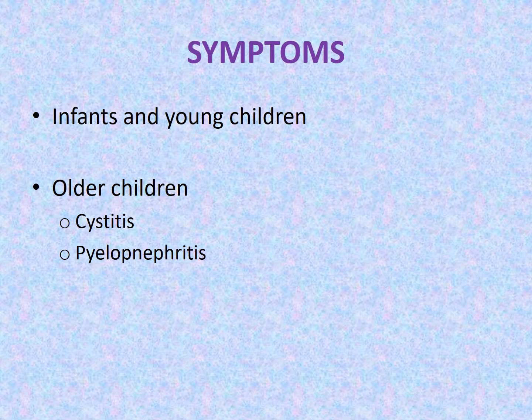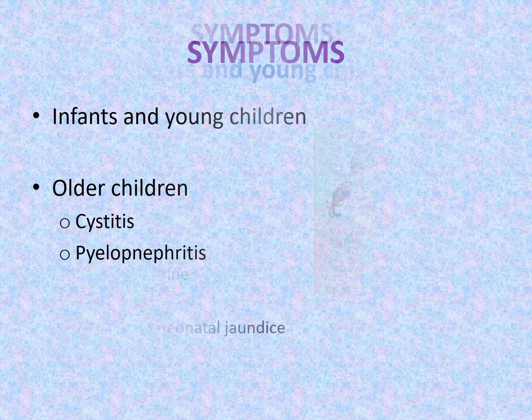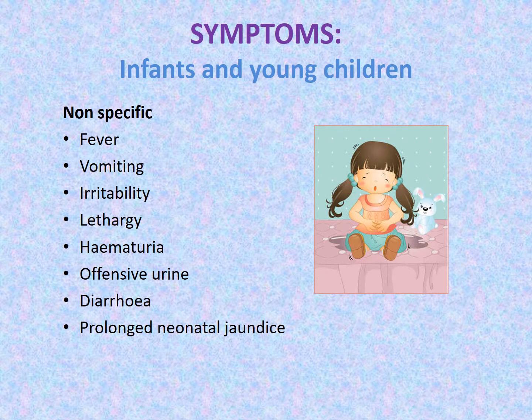The symptoms of urinary tract infection differ according to age groups and whether the child has cystitis or pyelonephritis. In infants and young children, the symptoms are fairly nonspecific such as fever, vomiting, irritability, and lethargy. The diagnosis depends on a high index of suspicion and should be considered in any infant and young child with unexplained fever. Sometimes they may present with hematuria, offensive urine, or diarrhea. In the neonatal period, they may develop prolonged neonatal jaundice.